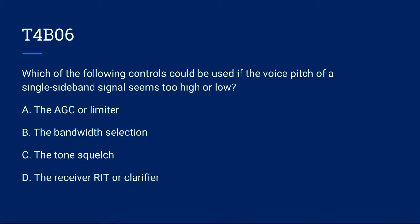T4B06: Which of the following controls could be used if the voice pitch of a single sideband signal seems too high or low? A. The AGC or limiter. B. The bandwidth selection. C. The tone squelch. D. The receiver RIT or clarifier. The correct answer is D. The receiver RIT or clarifier.